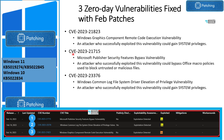The next zero-day vulnerability is CVE-2023-21715. This is to do with Microsoft Publisher security features bypass vulnerability. As per Microsoft, an attacker who successfully exploited this vulnerability could bypass Office macro policies used to block untrusted or malicious files. Basically, this vulnerability is to do with Office macro policies, and this is also very critical for most organizations — that's why it's called a zero-day vulnerability.